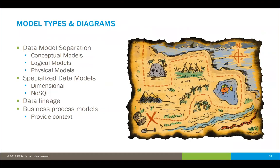In terms of data modeling, the data model separation is very important: conceptual models to drive home initial concepts, logical models where you're starting to elaborate those concepts more, and physical models which ultimately end up being the physical deployment of the databases or data stores. That includes dimensional models and models for NoSQL technologies on the physical side. Data lineage is important — understanding where data has come from and where it's going. Business process models, done partly by the data modeler or in collaboration with business analysts, are extremely important because they provide context for how the data is used.